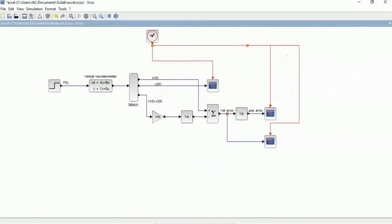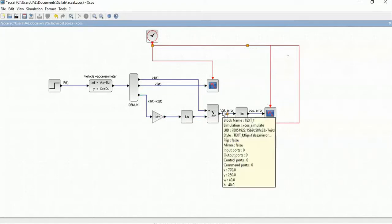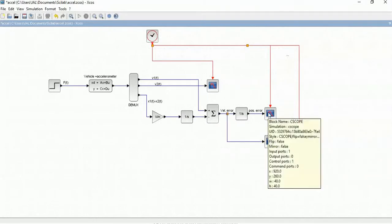Here we have our simulation model for the first filter. Our input F, the vehicle plus the accelerometer, our three state variables, the filter K(s), the velocity error and the position error. Now we run the simulation and check our results.